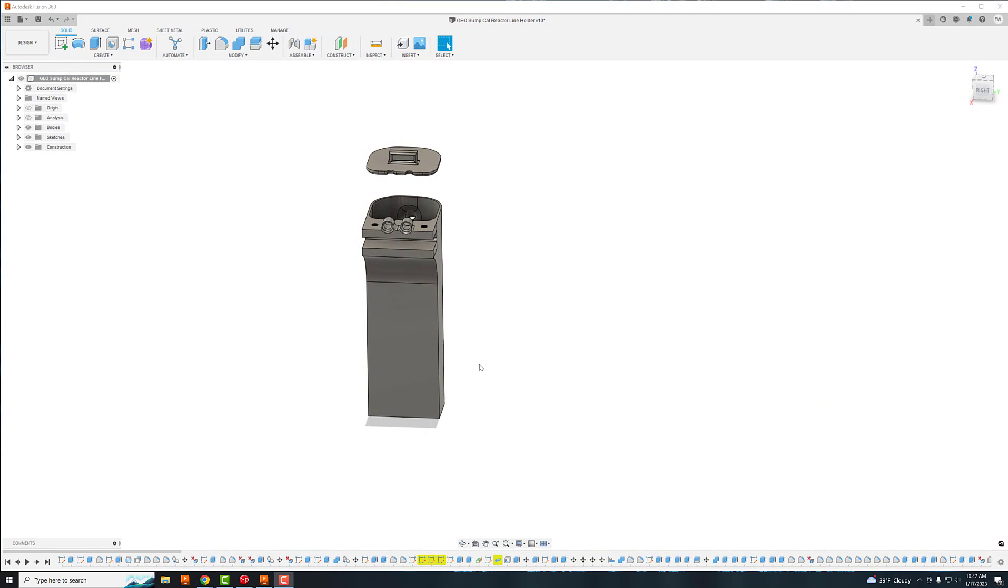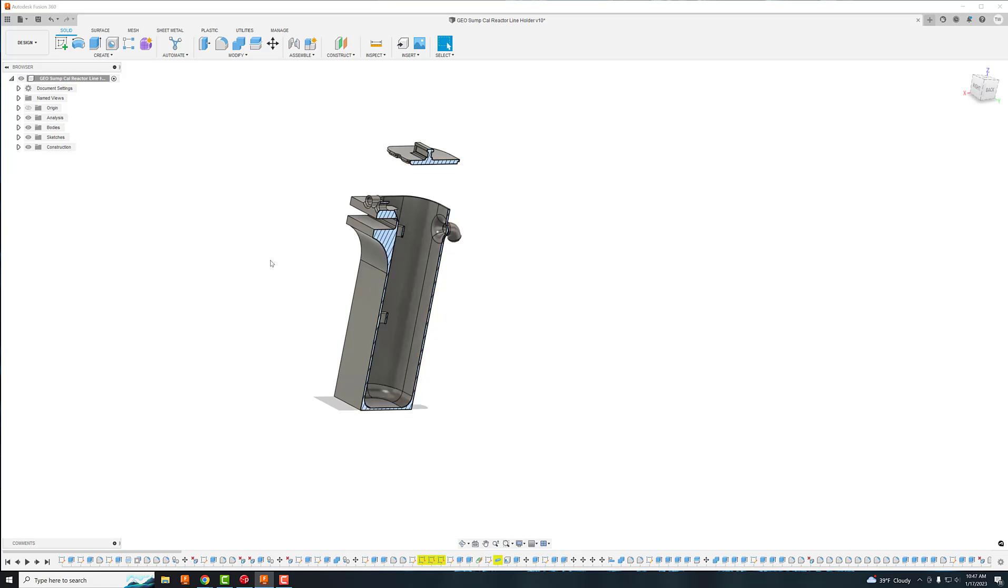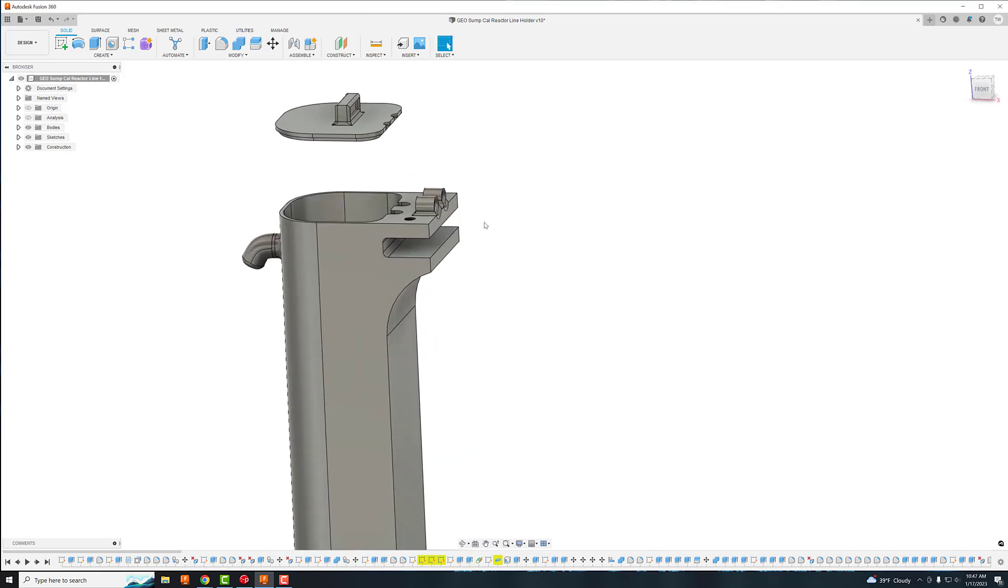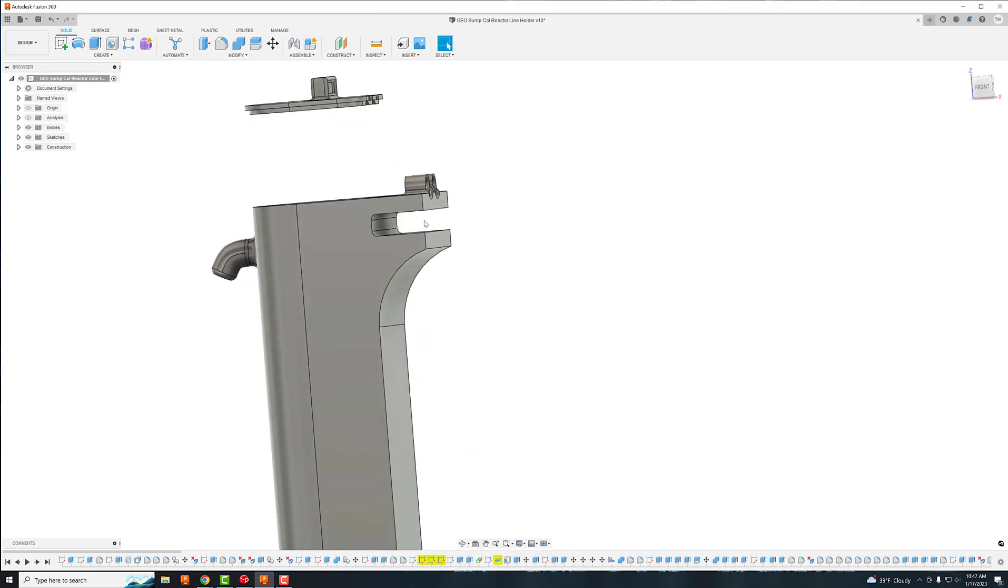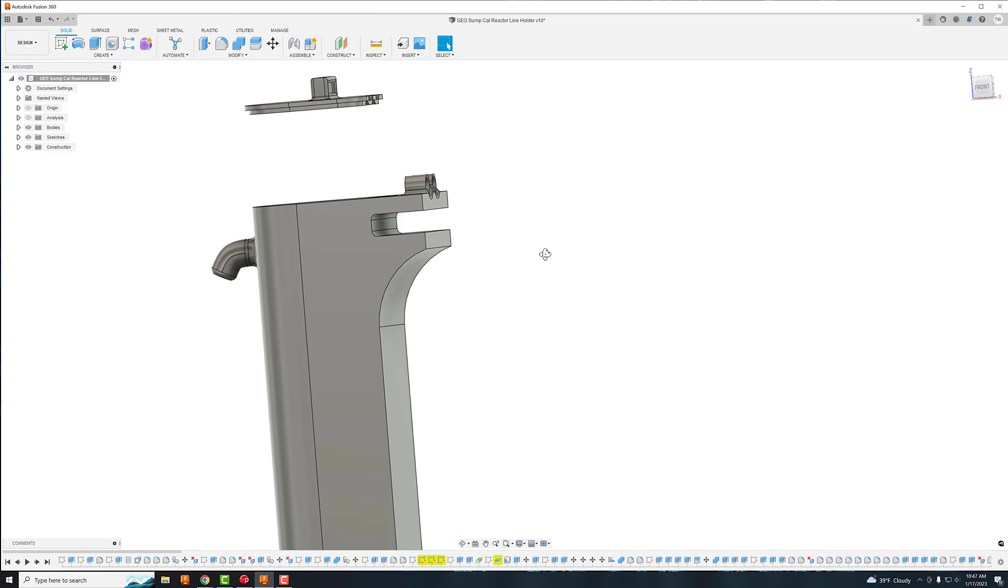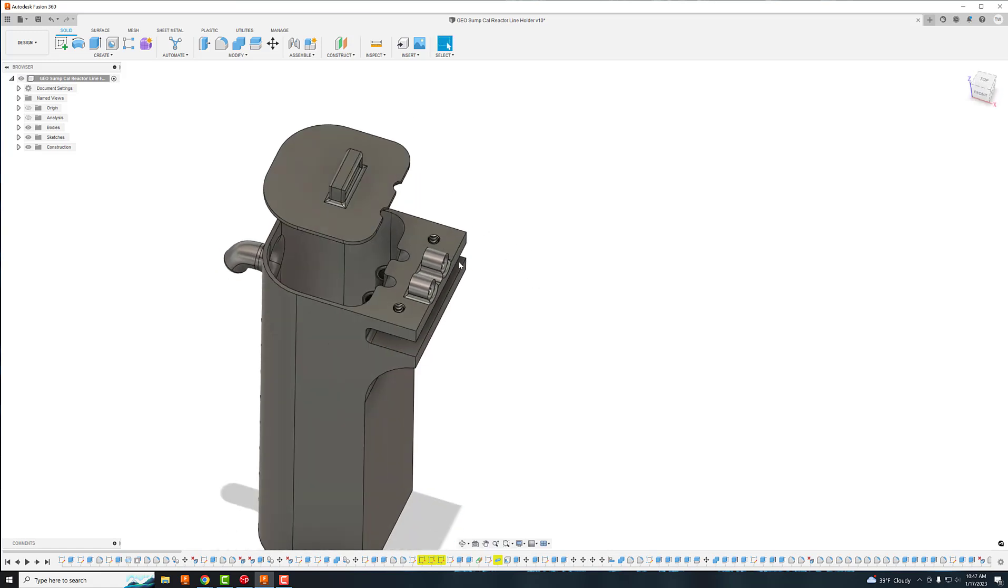So we're here in Fusion 360, and I'm going to show you some of the features. First things first, it's going to attach here on the geo sump. I made it big enough to slide over the acrylic and added some slots for M3 screws just to add a little pressure so it doesn't slide off.